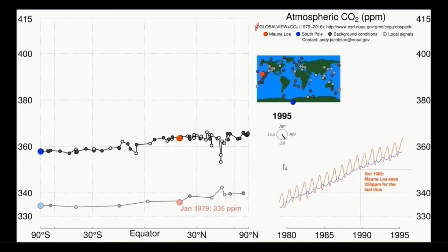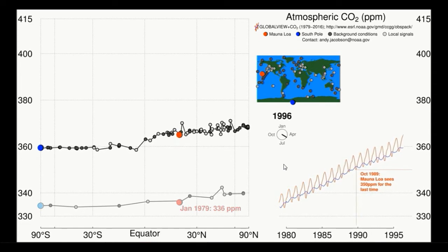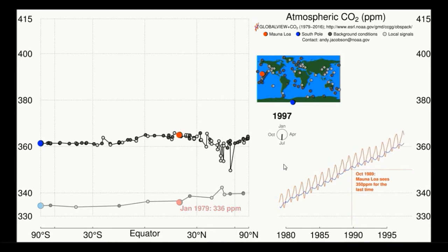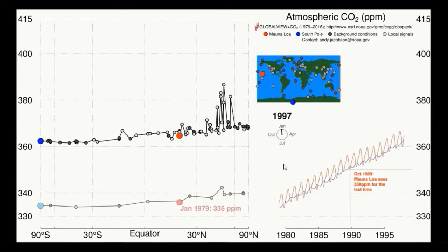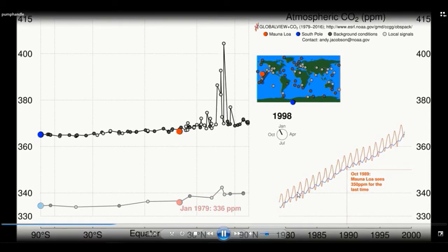In the autumn and the winter those leaves and flowers fall off and start to decompose. That causes carbon dioxide to be released back into the atmosphere and so the carbon dioxide concentrations increase again. This causes a continuous wave.